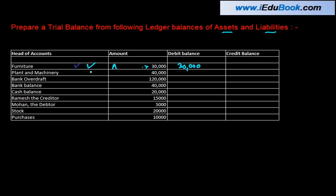Plant and machinery is again an asset. As I told you, an asset has a debit balance. So whenever you come across any asset, the balance normally will be a debit balance. For liabilities, it will be a credit balance. So whenever you get any balance, just pick it up and put it in either the debit column or the credit column as the case may be.